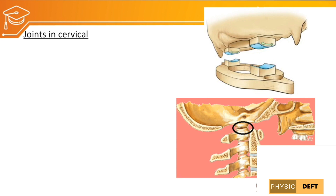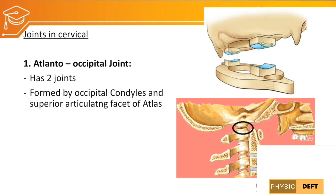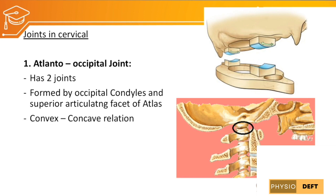The first specific joint in the cervical vertebral column is the atlanto-occipital joint. It consists of two joints formed by the occipital condyles and the superior articulating facets of the atlas. The convex surface of the occipital condyle articulates with the concave superior articulating surface of the atlas.